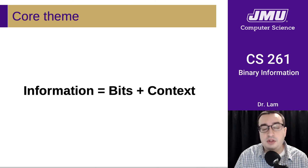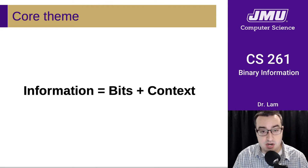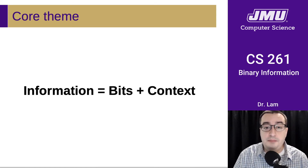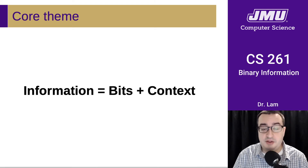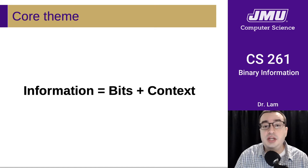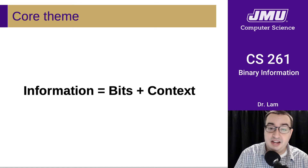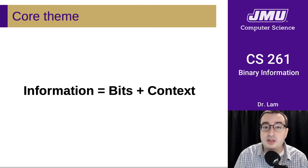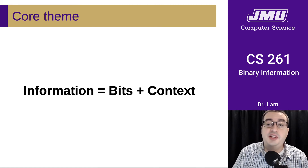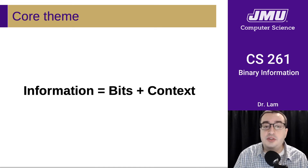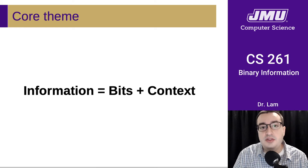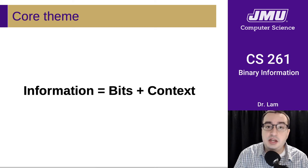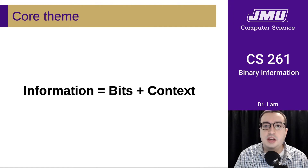This leads to one of the core themes in this class: information is actually bits plus context. You have to have some bits — the symbols stored somewhere — but you also need to know how to interpret those bits, because otherwise there's a potentially infinite number of ways of interpreting them. You don't really know what you have until you know the context for what you have. This is a theme we will see in many different places this semester.